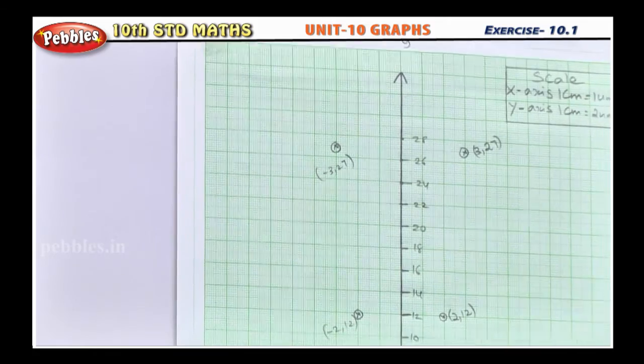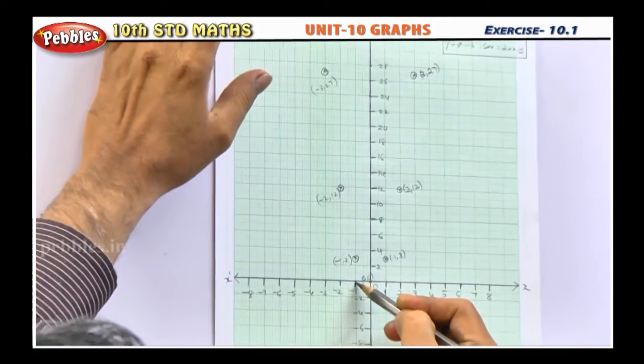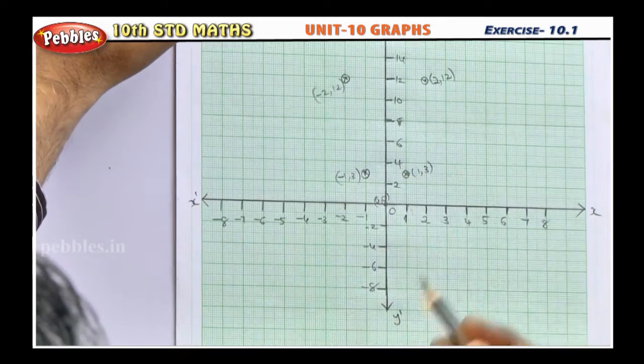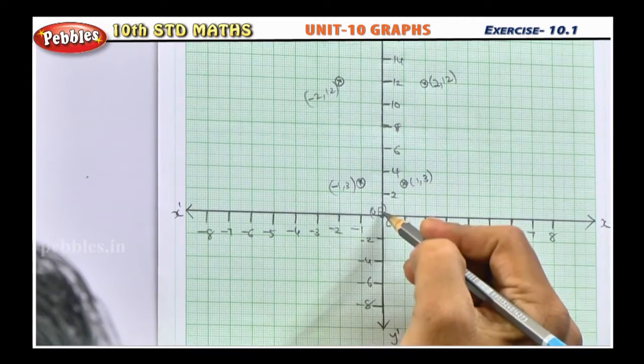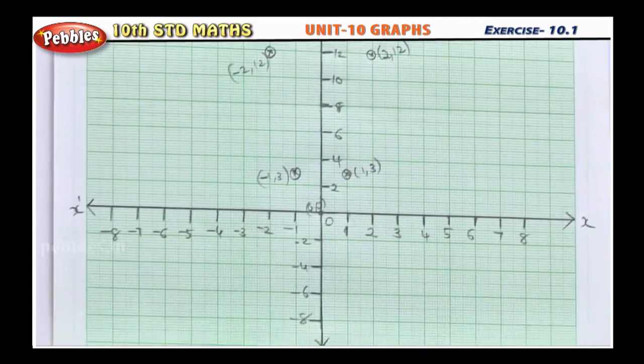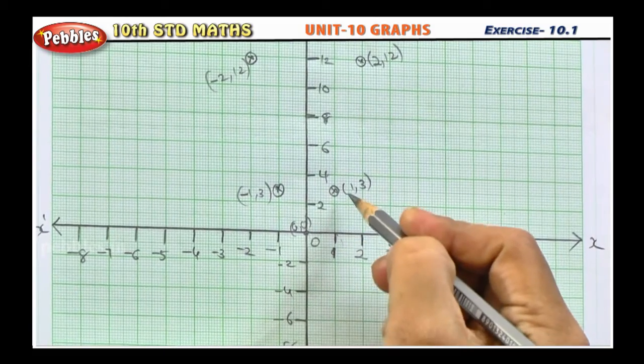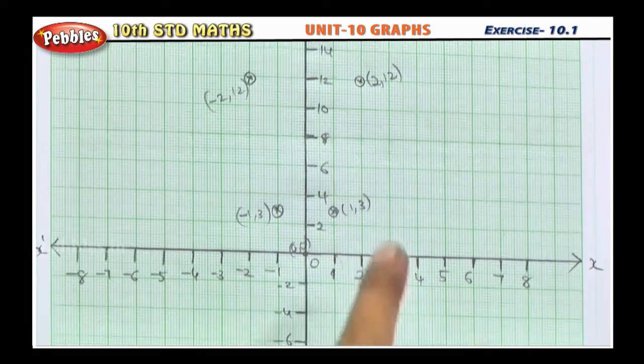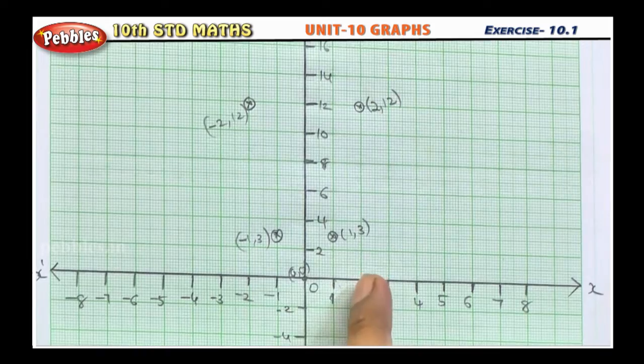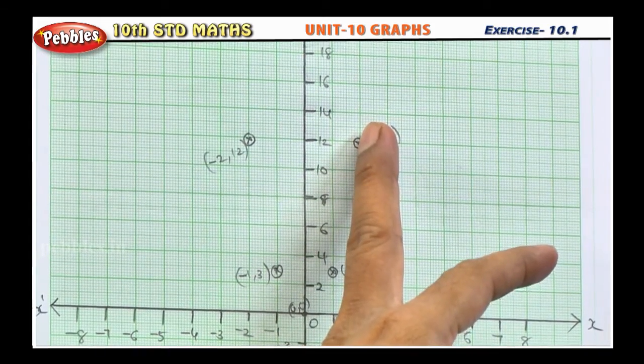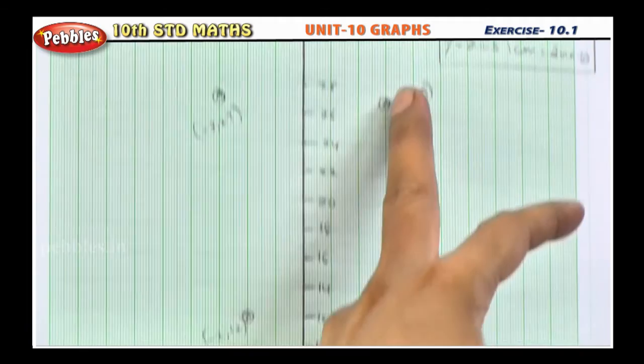This point, then next 0, 0 nothing but origin. Next 1, 3. On x axis 1, y axis 3. Next for 2, 12. This is 2, this is 12. Next for 3, 27. For 3 it is 27.